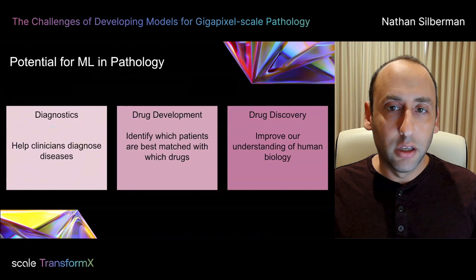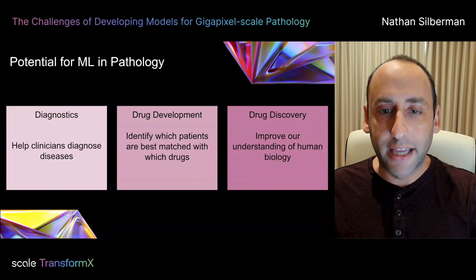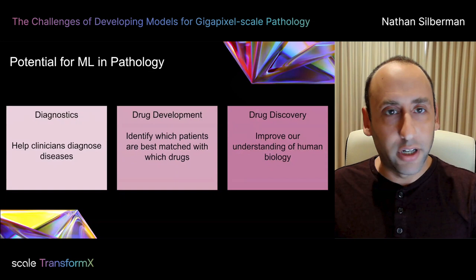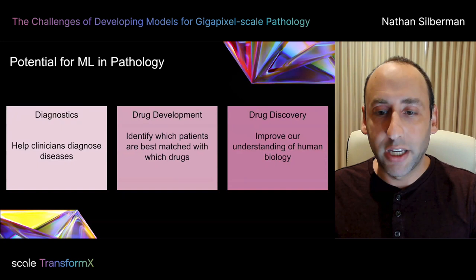Drug discovery is the process of identifying novel molecules and medications for diseases. During this phase, pathology slides from clinical trials and clinical practice are of immense use in understanding the highly complicated nature of human biology and cellular anatomy. Across all these areas, there's far more demand to interpret pathology images than there are pathologists, and the size of the datasets involved often makes human interpretation impossible. So in short, there is potential for machine learning to do this at scale, and it's enormous.